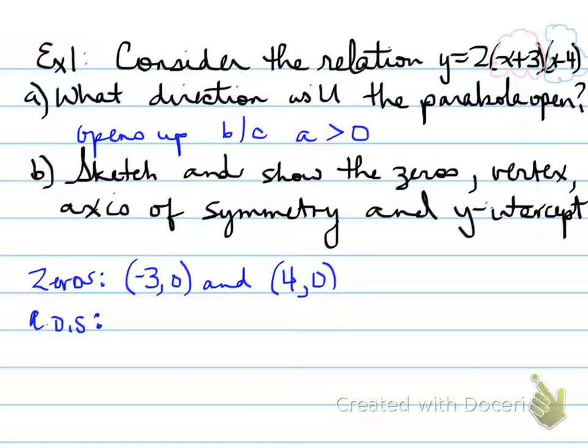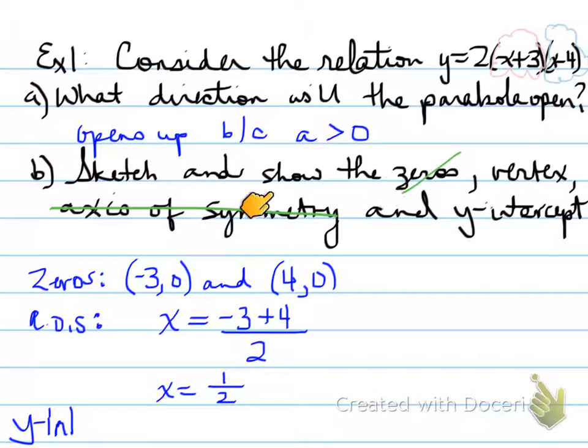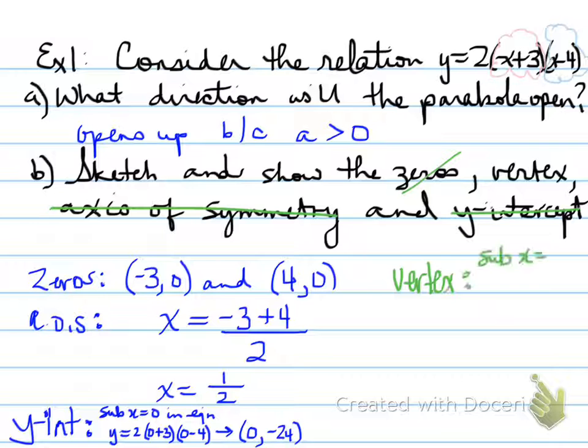Next thing we're looking at is we need the axis of symmetry, and we can do that by adding our x's and the zeros and dividing by 2. Negative 3 plus 4, all divided by 2, gives us 1 half. So x equals 1 half is our axis of symmetry. We also need the y-intercept. We sub x equals 0 into the equation, and we get 0, negative 24.